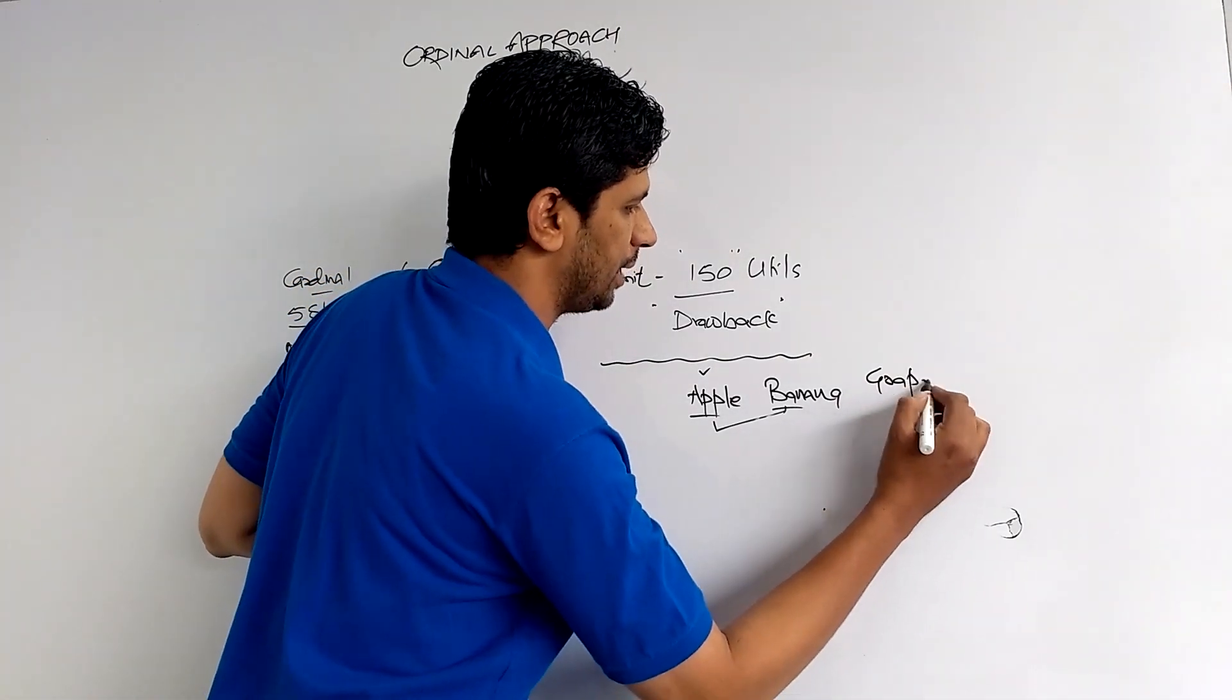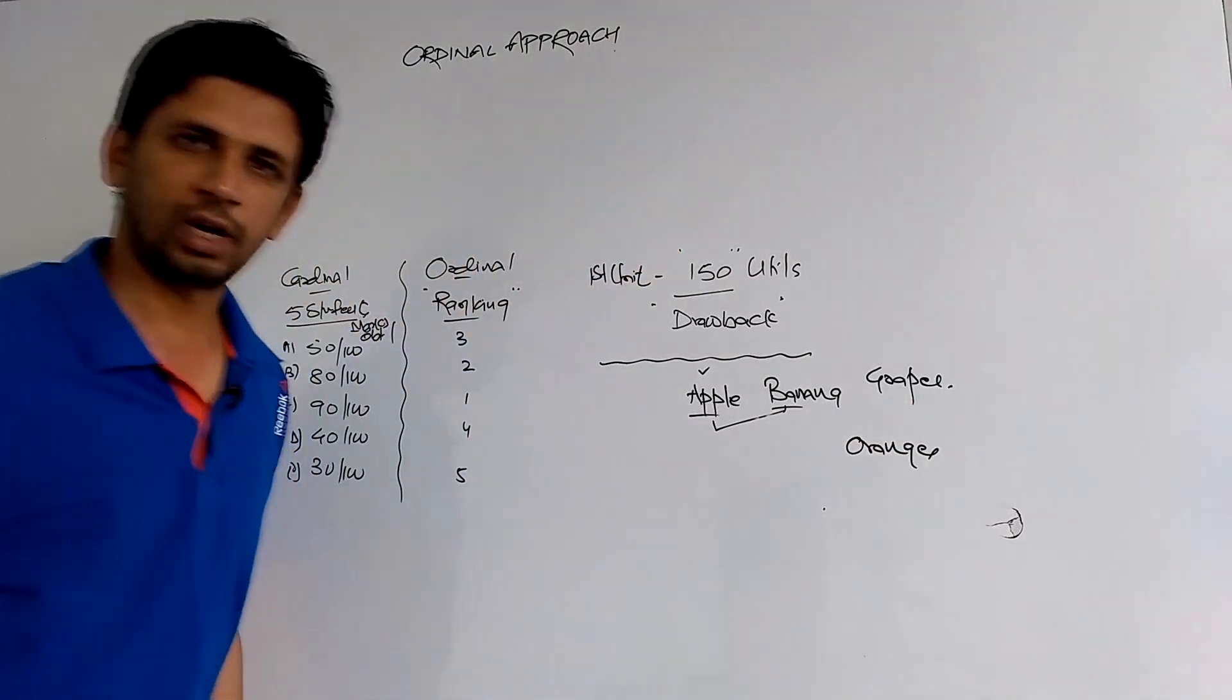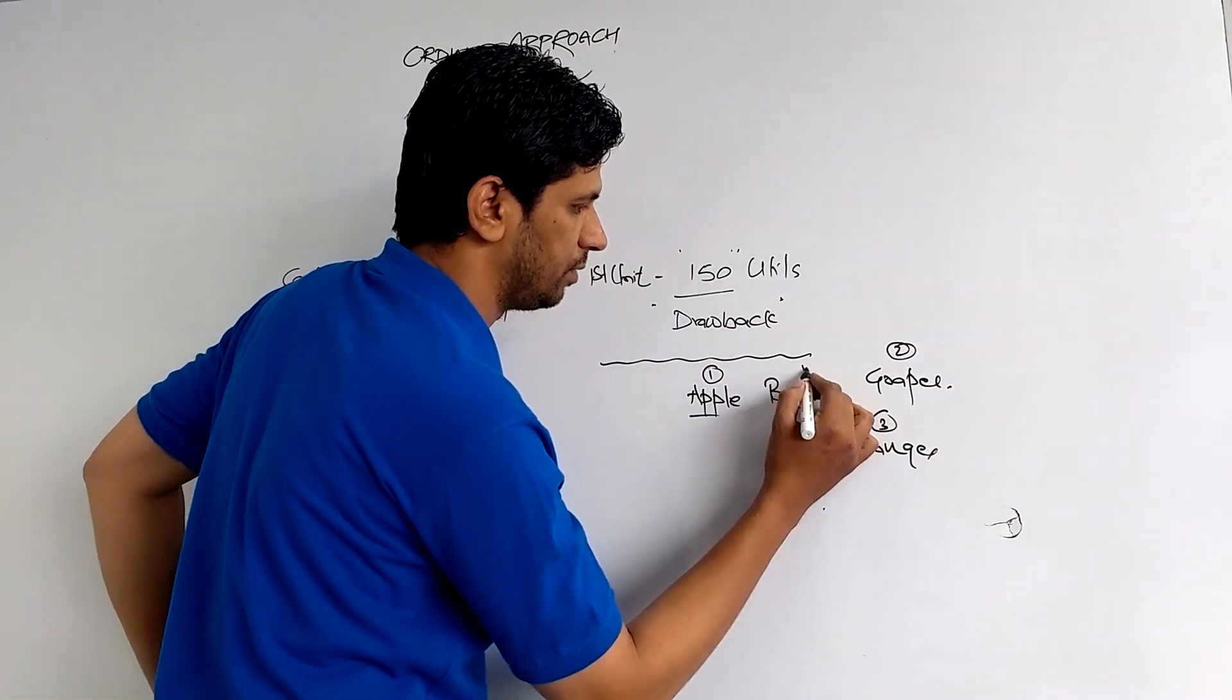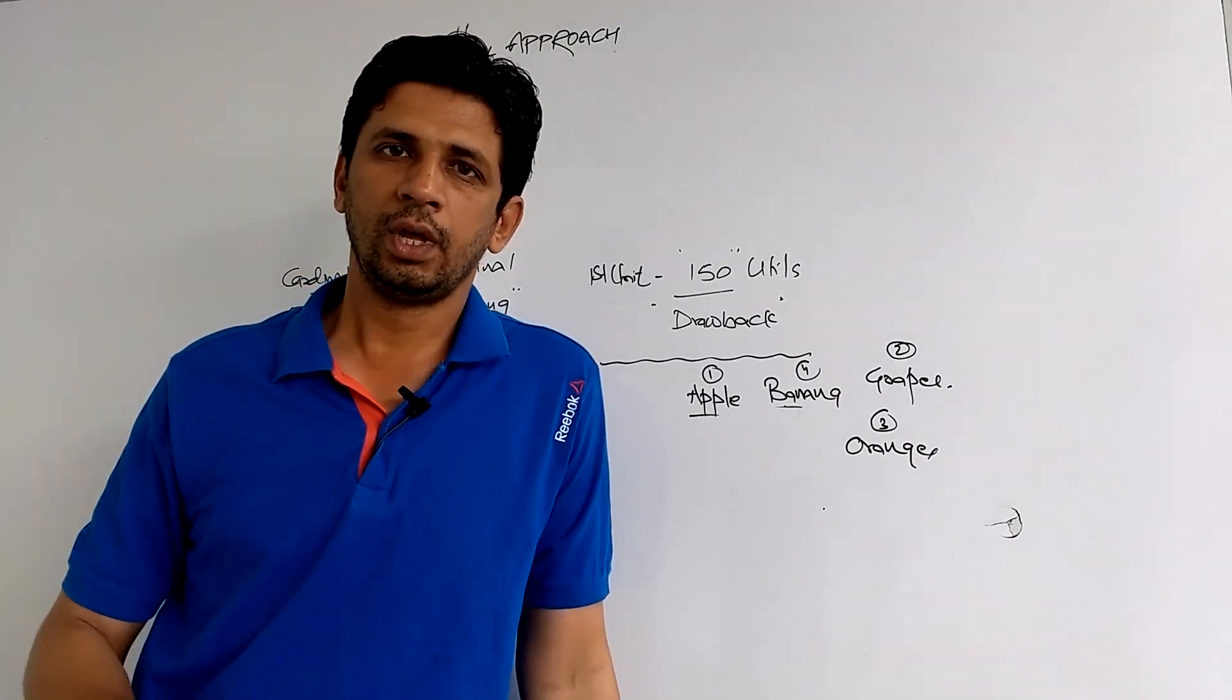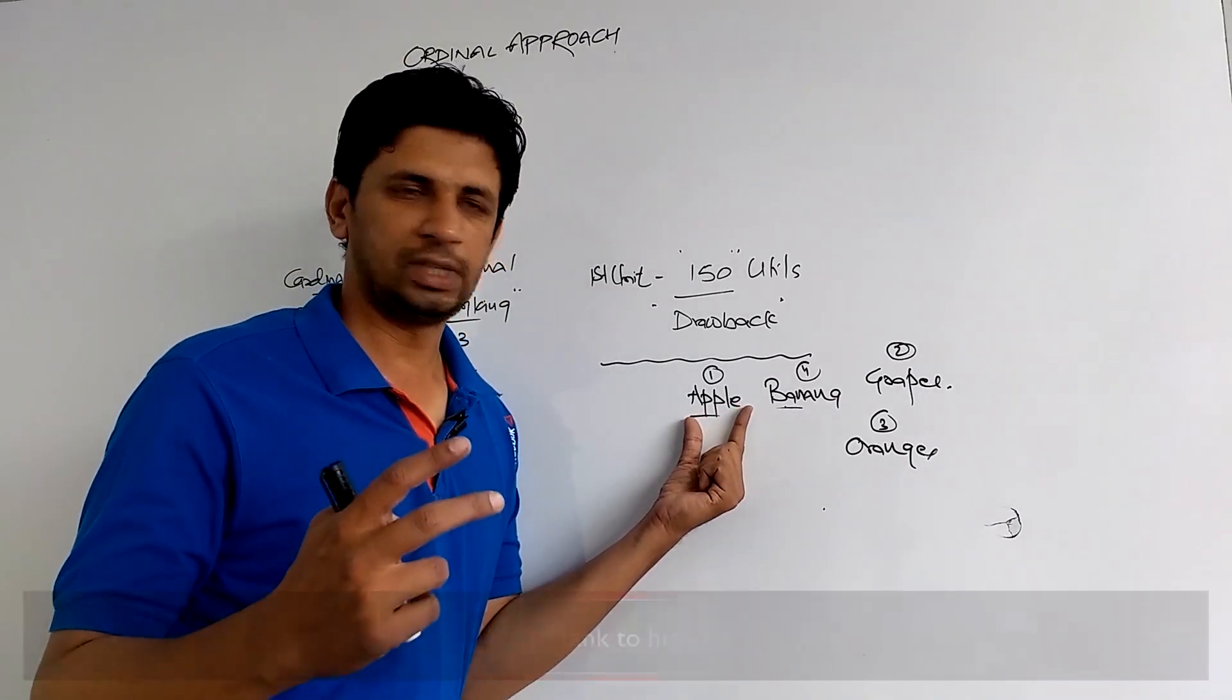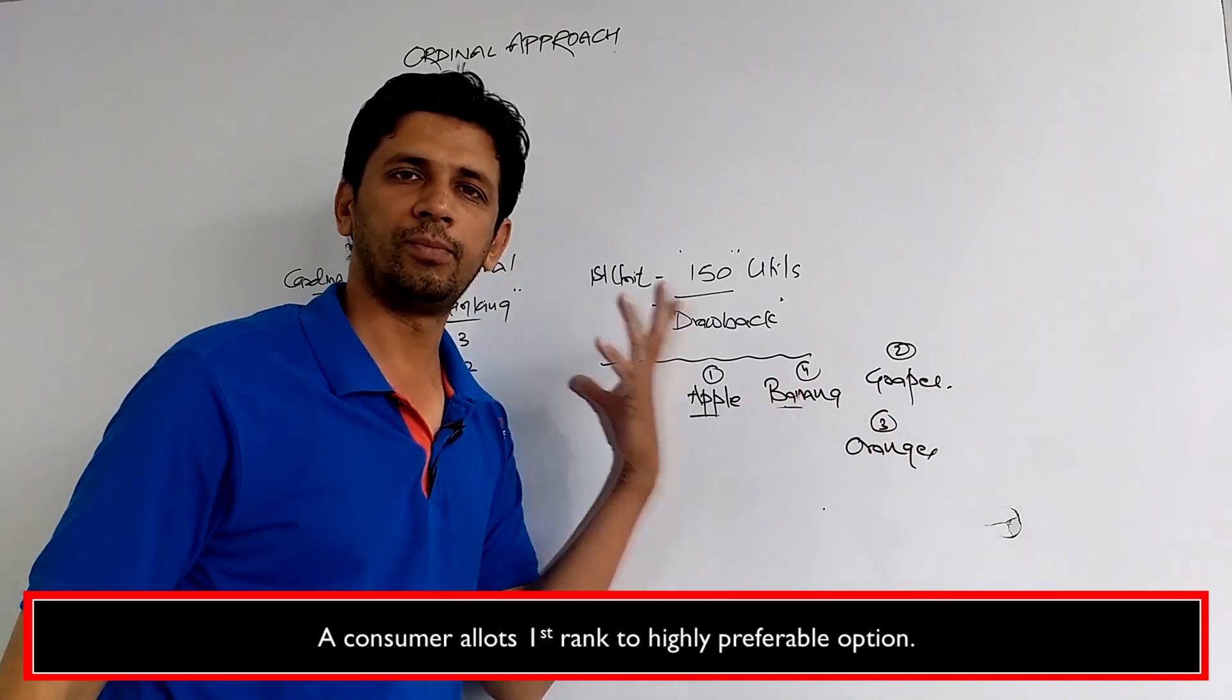He is getting more satisfaction from the apple, so we set priorities here. We say that we have five things in front of you like apple, banana, grapes, oranges, and what do you prefer in this ranking? So if he said that I will prefer apple first, grapes second, oranges third, and banana fourth, means that this priority ranking is set. The highest satisfaction he will receive from the apple, then from grapes, then from oranges, and then from banana.